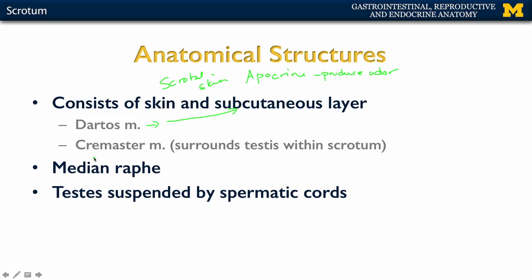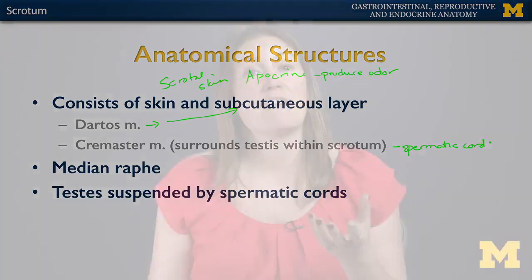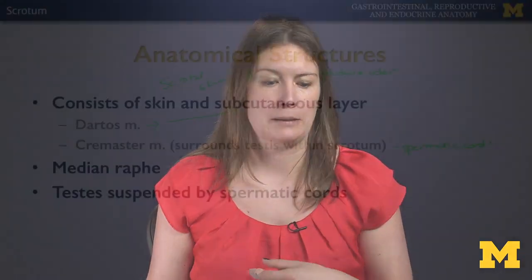Very closely associated with the dartos muscle is the cremaster muscle, and we'll talk about this in more detail when we discuss the spermatic cord because it's going to really be surrounding that spermatic cord. It's going to have a very similar role — when it contracts upon contact with a cold environment, that's going to allow for the testes to ascend and get closer to the actual body.